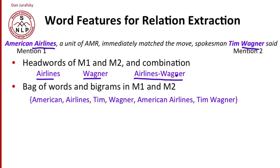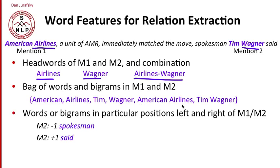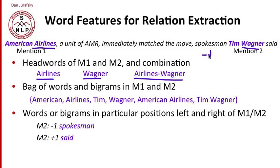We might also include the two mentions as a bag of words or even a bag of bigrams. So the words American, Airlines, Tim, and Wagner all occur in the two mentions, and the bigrams "American Airlines" and "Tim Wagner" occur in the mentions. We can also pick words at particular positions to the left and right of the two mentions. For example, the word before mention two — word minus one — is "spokesman," and the word after mention two — word plus one — is "said." After mention one, if counting punctuation the first word is a comma; if not, it's "a." The word before American Airlines is nil — there is no word before it.